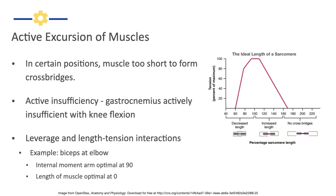Active insufficiency is where the muscle is so short that it can't generate cross bridges. When we look at that end of the curve, what we have is an overlapping of the actin filaments, which means the myosin can't bind with as much of the actin and generate as much force. The important thing to understand is that the length of a particular muscle will affect its ability to develop tension at a joint.